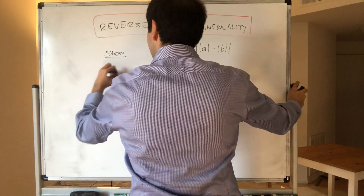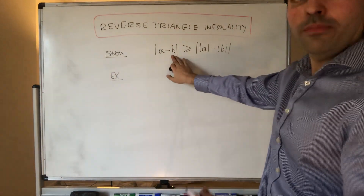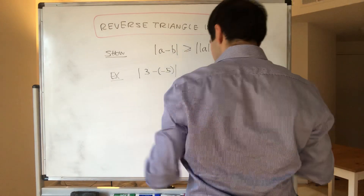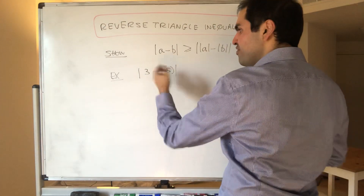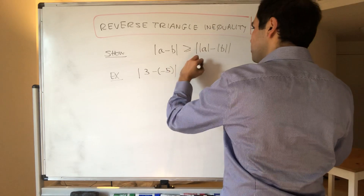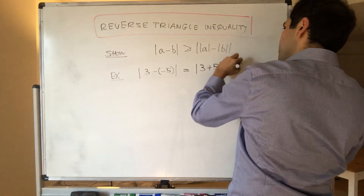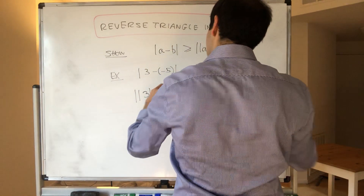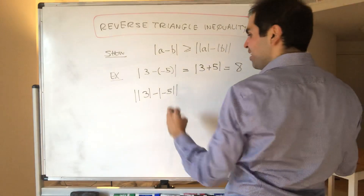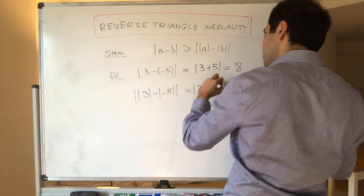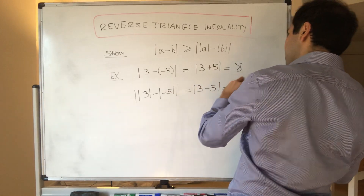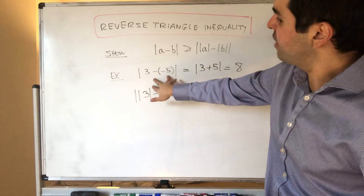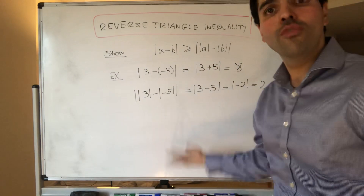Why is this intuitively true? Because b might sometimes be negative. Consider three minus minus five — the fact that we have a minus five here is useful, because it means this becomes three plus five, which is eight. On the other hand, if you change this to absolute values, that's bad, because this becomes a plus five. So we have three minus five, which is the absolute value of minus two, and that is two. So what this is saying is the stuff without absolute values is always bigger than the stuff with absolute values.